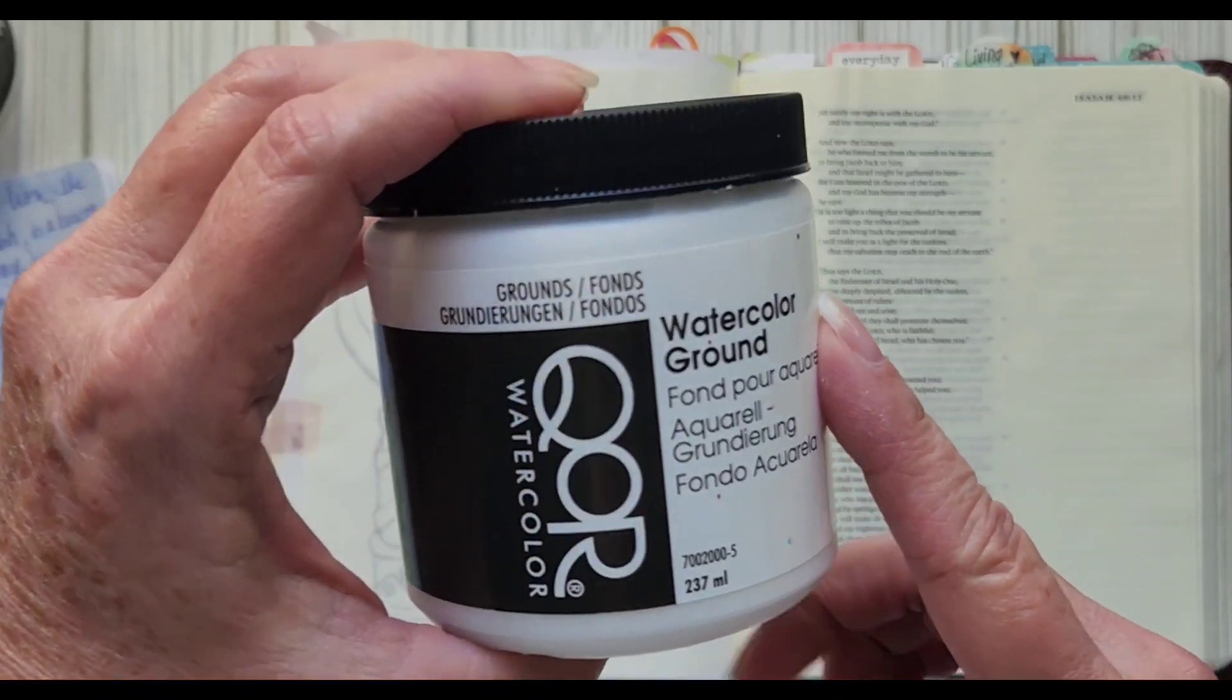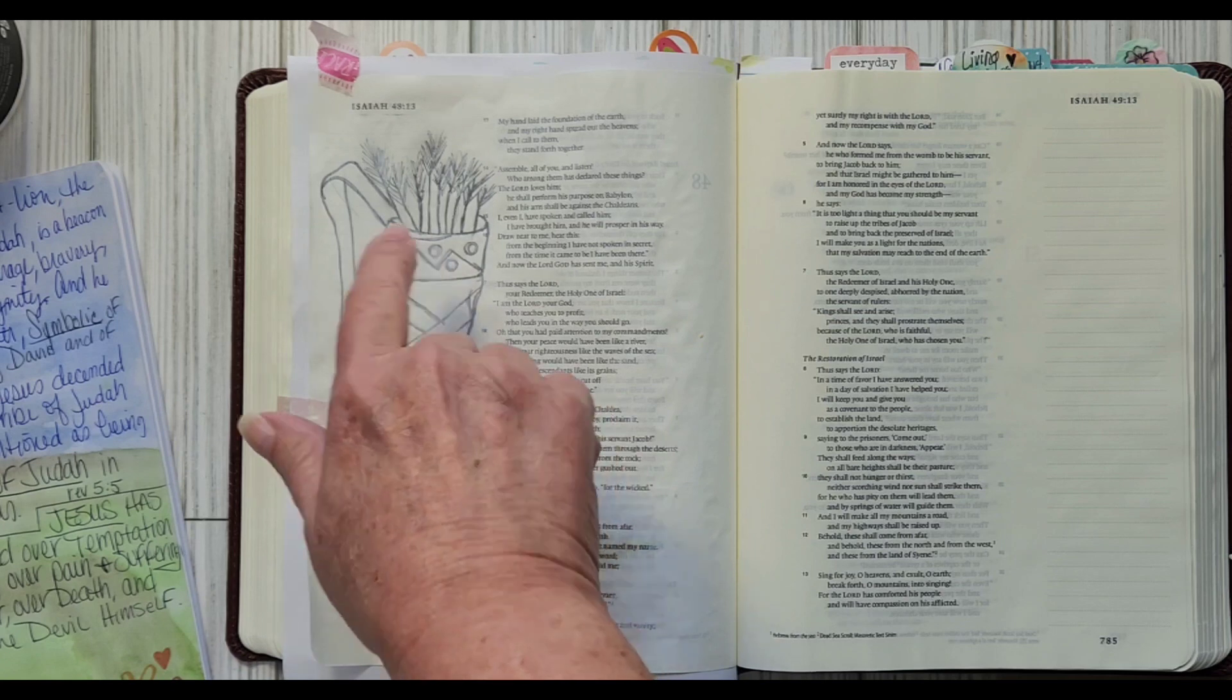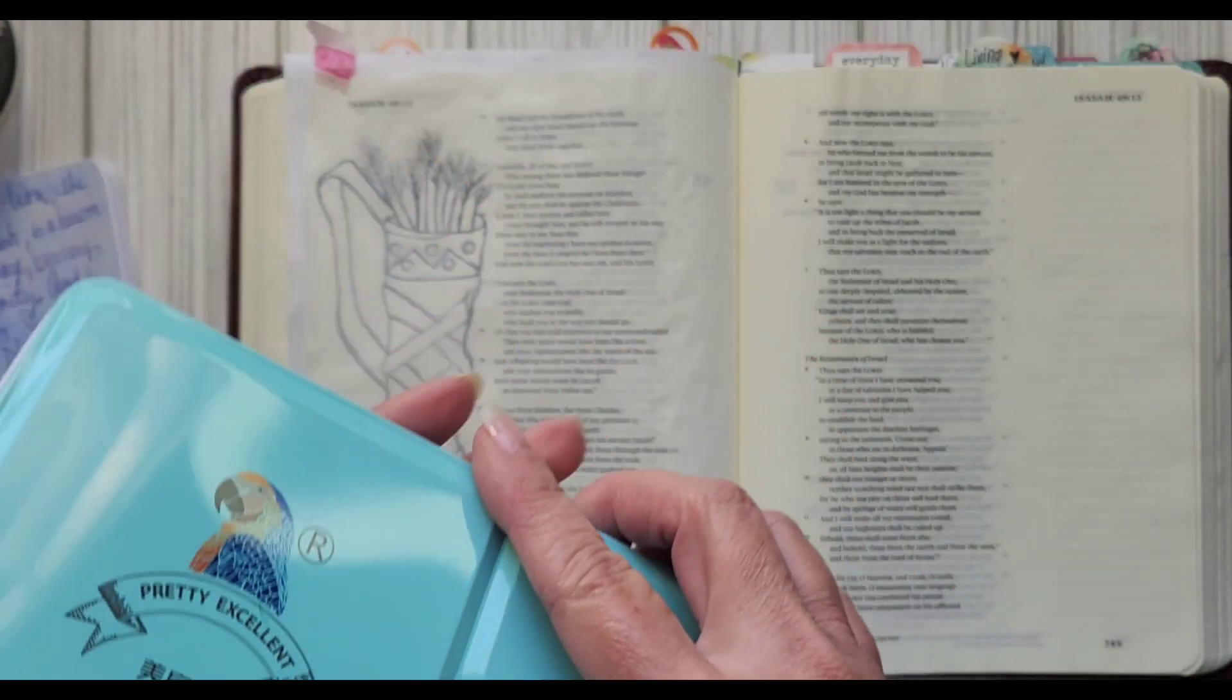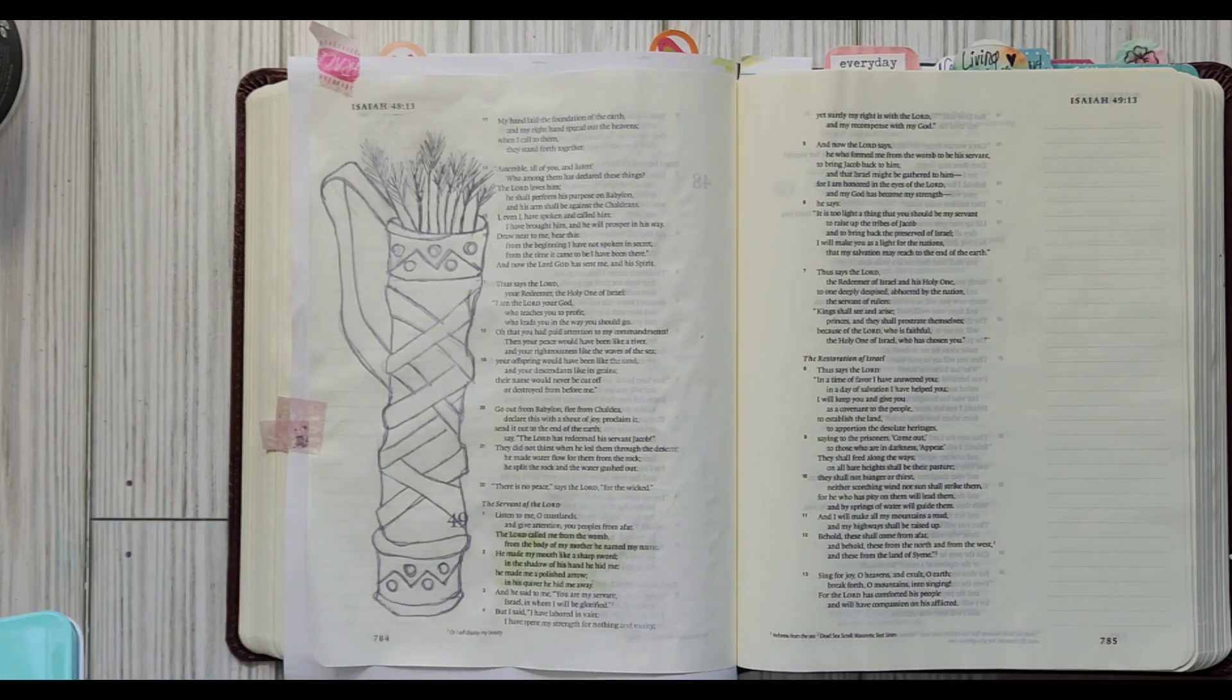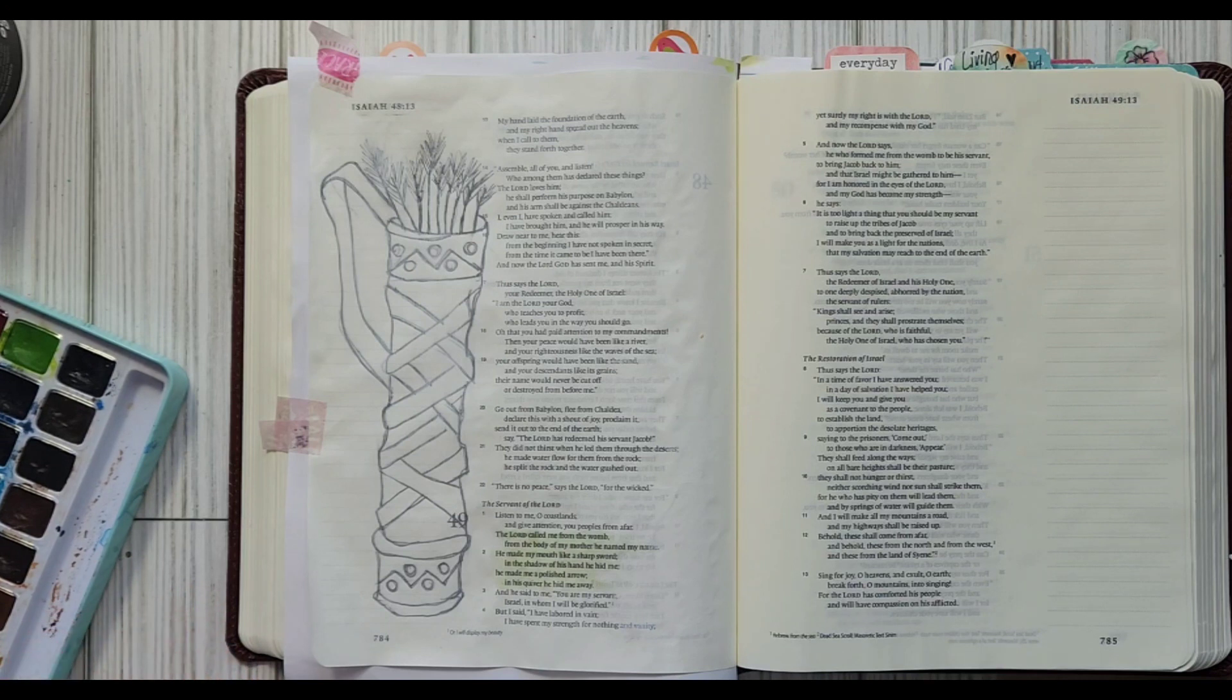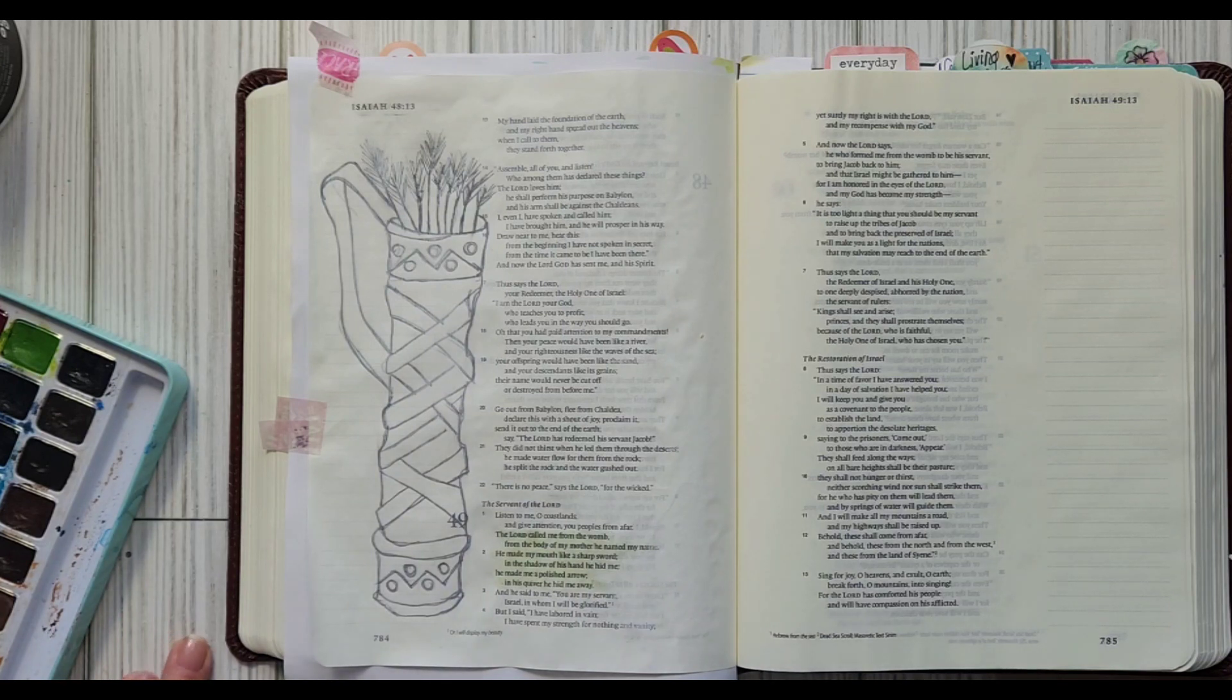I have already put clear gesso in the word area and this time I put watercolor ground on the image. I'm going to use pretty excellent watercolors I got from Amazon, comes with a little handle on the back. Isaiah has to do with a lot of the servant songs about Jesus and God designated him before birth to a particular calling as a light for all nations.